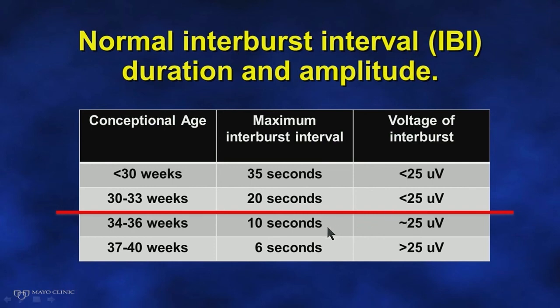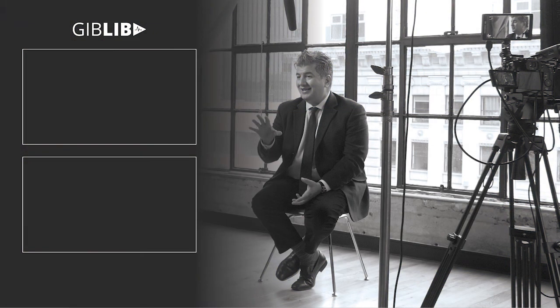By term, the expected voltage during the interburst period should be around 25 microvolts, and the duration by around term should be no more than 10 seconds.